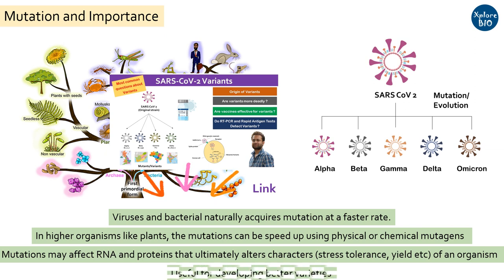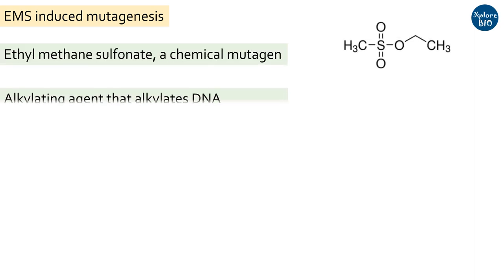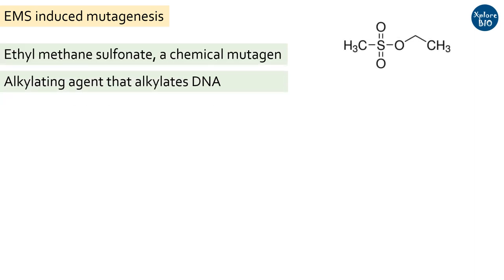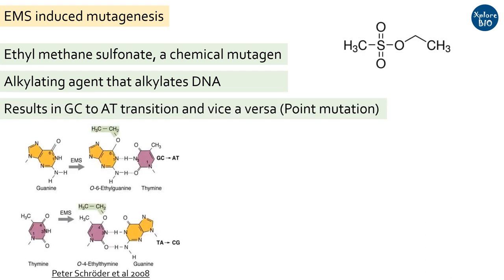Thus, it can be proved extremely useful for crop variety improvement. One of the most commonly used and potent chemical mutagens is EMS, or ethylmethanesulfonate. It is an alkylating agent most commonly used for mutating plants. It produces primarily point mutations in the DNA, resulting in GC to AT transition and vice versa. To a lesser extent, it may also result in chromosomal segment deletion.